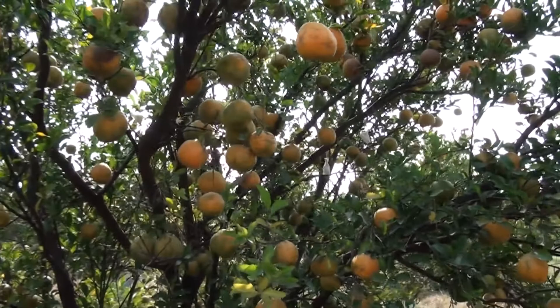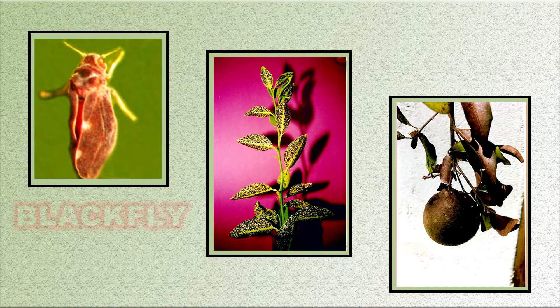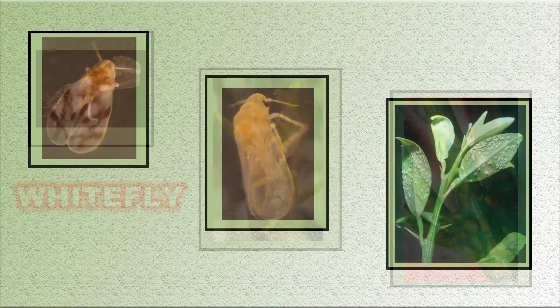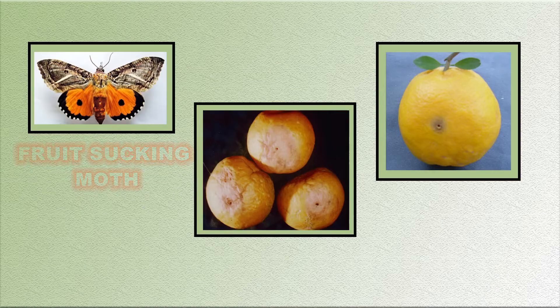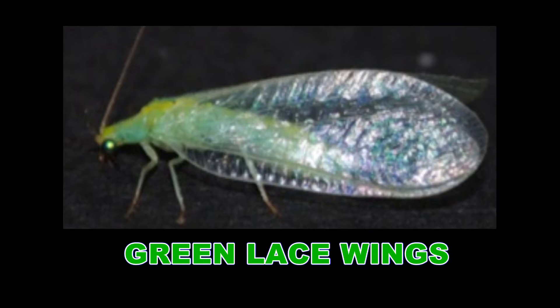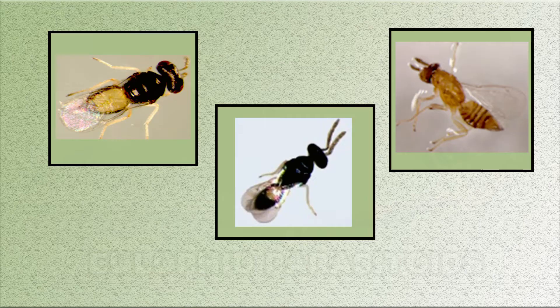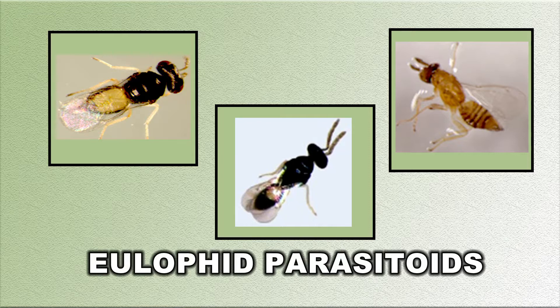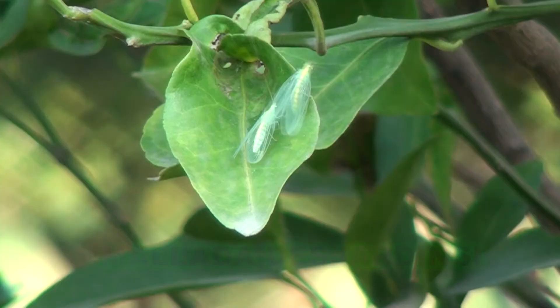Among the pests of economic importance in India, citrus blackfly, leafminer, psylla, whitefly, mealybug, bark-eating caterpillar, fruit-sucking moth, and thrips are significant. Among the management measures, biocontrol agents like predators — green lacewings, ladybird beetles, antlions, and yellow syrphid flies — play key roles.